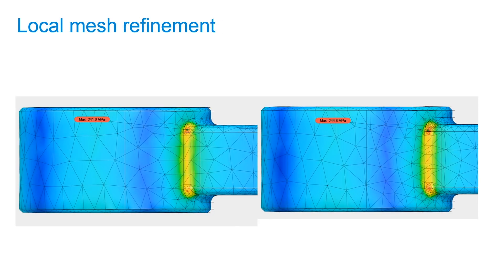Let's also take a look at what local mesh refinement can do. The image on the left is the one done using adaptive mesh refinement. The image on the right, however, I manually selected the fillets, and I dictated a smaller mesh element size. You'll notice that the max stress value in the left image is 241 megapascals, while the one in the right image is 244. So by refining the mesh a little bit more, we converged at a slightly higher stress value.